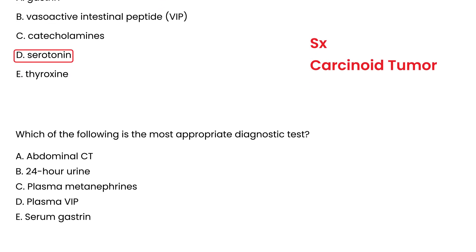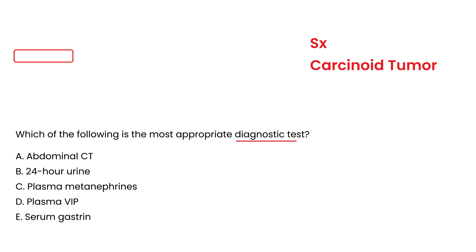Which of the following is the most appropriate diagnostic test? Remember, always choose the cheapest and easiest option rather than jumping straight to CT. You are looking for 5-HIAA, which is a metabolite of serotonin, and that is found by taking a 24-hour urine sample and testing it. So the answer would be a 24-hour urine collection for 5-HIAA.